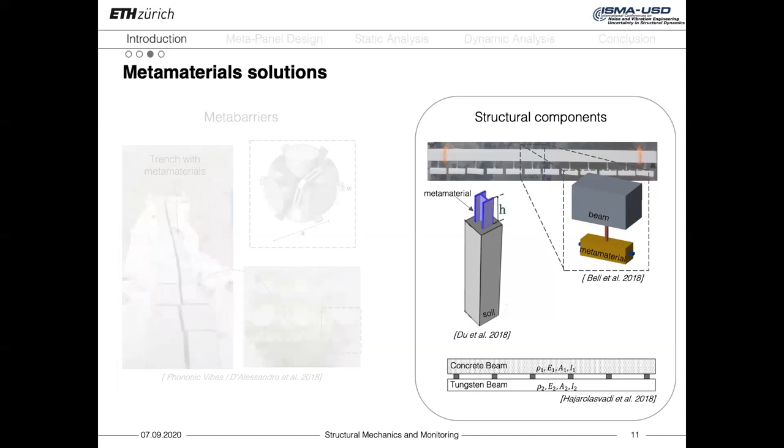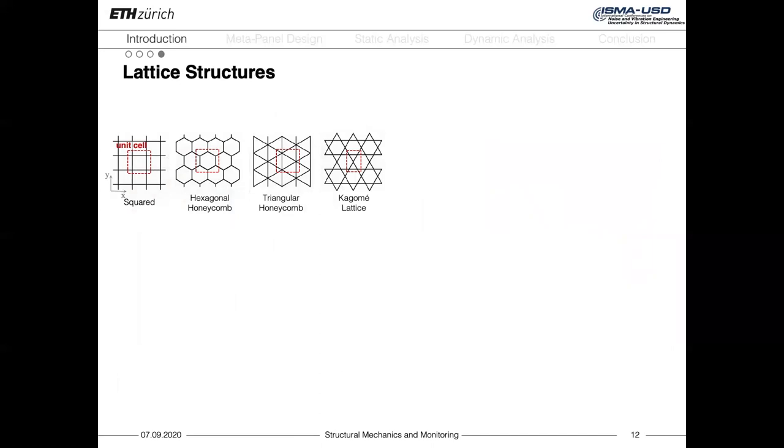If we think about densely populated urban areas, where the distance between the tracks of trams or trains and buildings is quite limited, it might be tricky to implement the solutions involving metabarriers, since they might require wide spaces. For this reason, in our study, we decided to focus on the second approach, the structural metacomponents. Our objective is to design a metapanel to be attached to pillars and that should prevent the propagation of vibrations through the structural component.